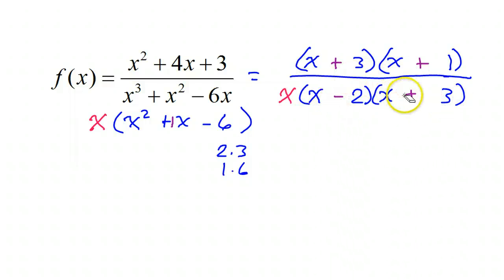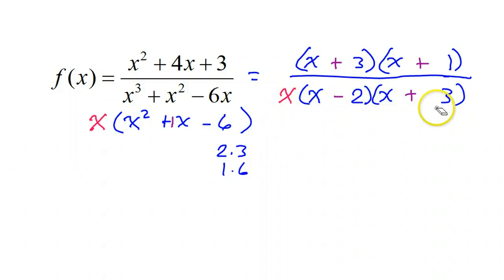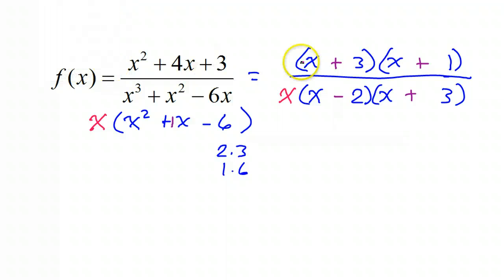If nothing canceled, I would have three vertical asymptotes from setting these equal to zero — so it would be zero, positive two, and negative three. Anything that cancels, however, will not be an asymptote but instead a hole. I do have a factor that cancels: the x plus three.